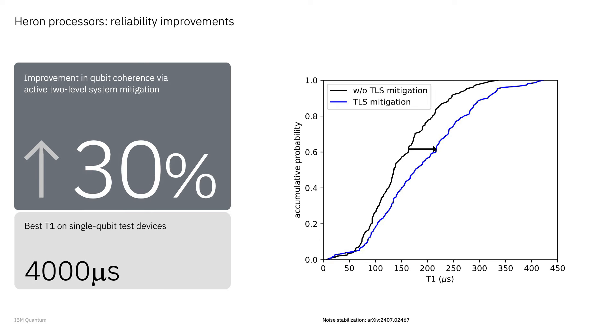Two-level systems have been a big source of relaxation time fluctuations, impacting the stability, uniformity, and throughput of our quantum processors — increasingly a challenge as we execute utility-scale workloads with large qubit counts. In our latest Heron processors, we've introduced capabilities to reduce the detrimental effect of these two-level systems. This can lead to a 30% improvement in median T1 times across the device, and even stabilize the noise for error mitigation.